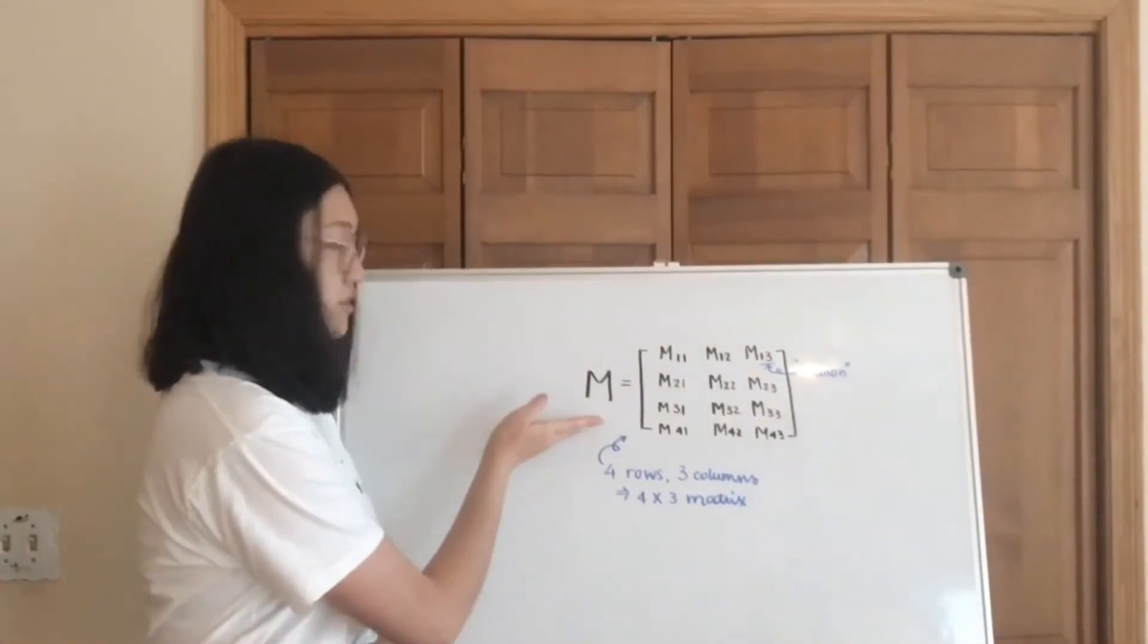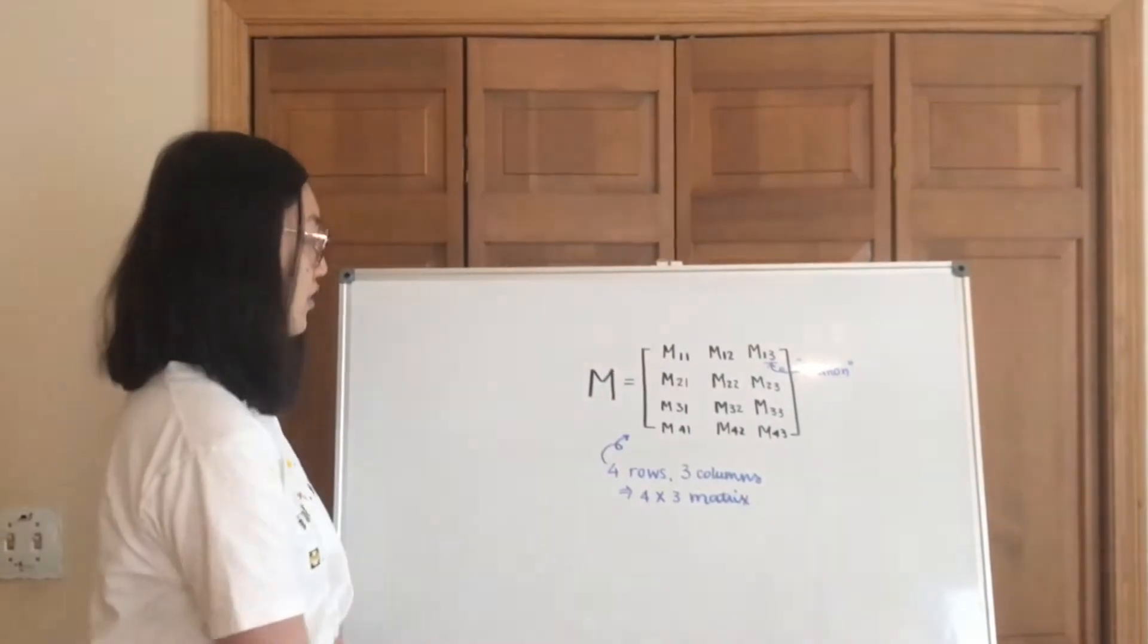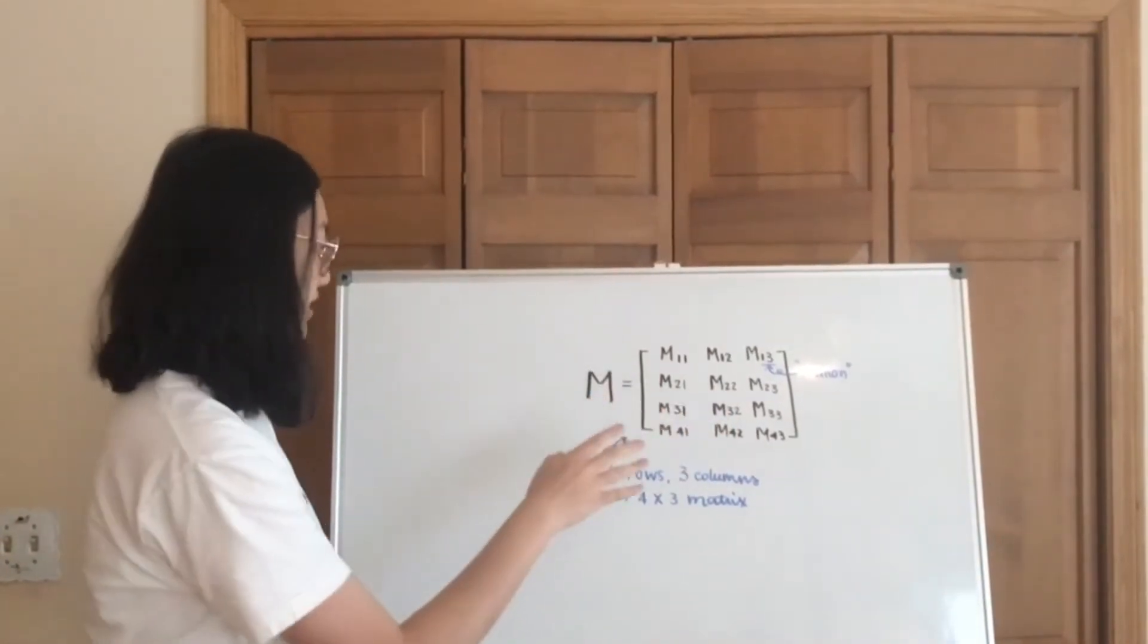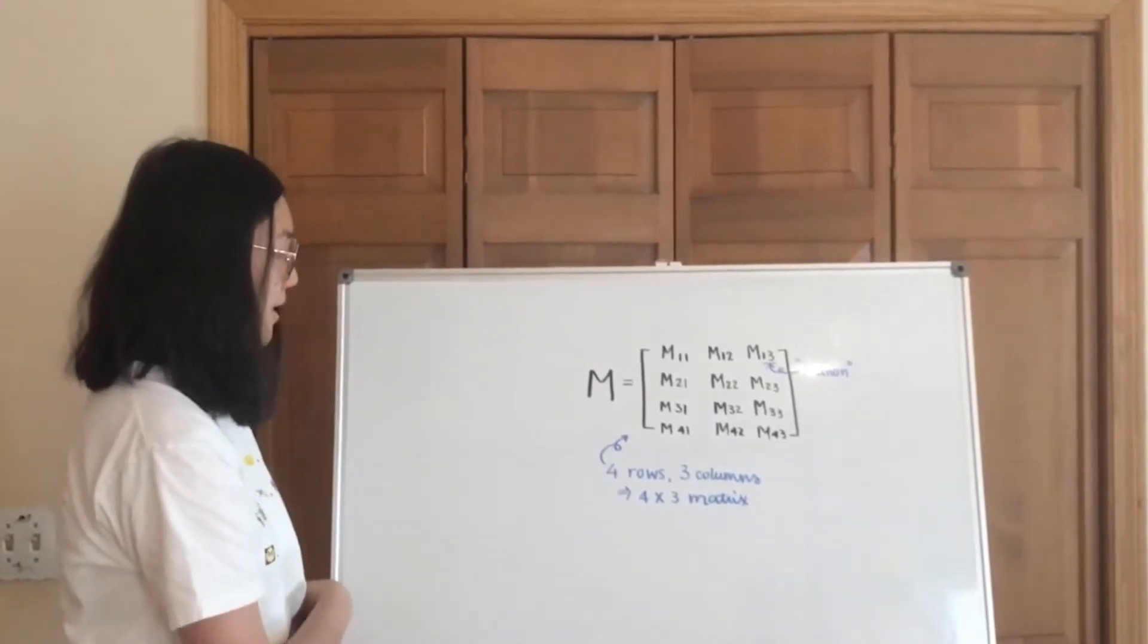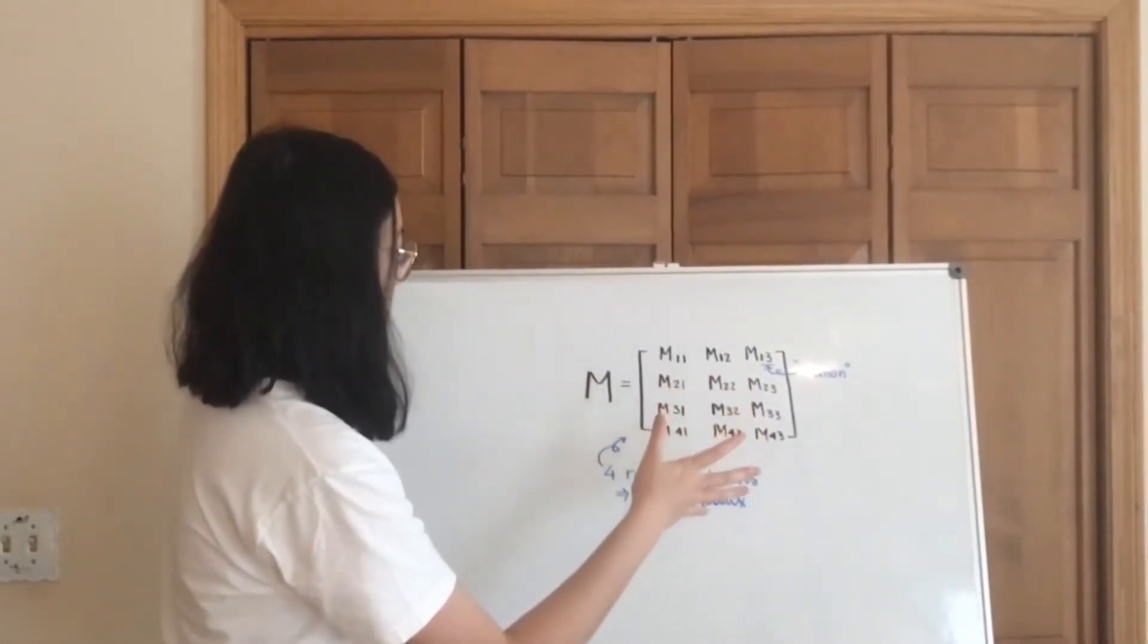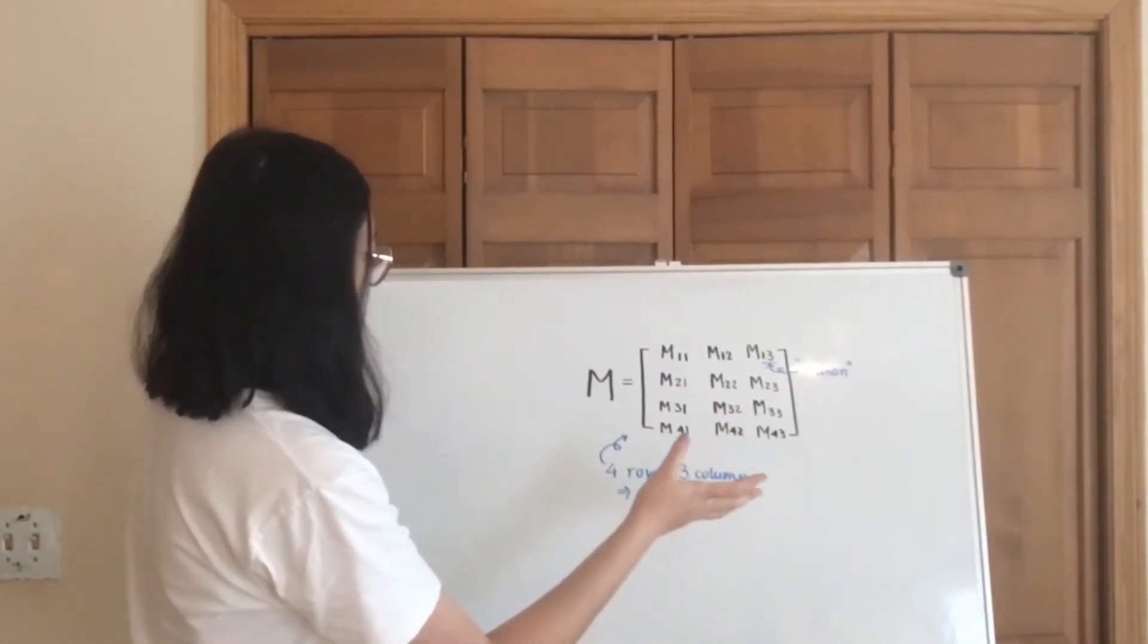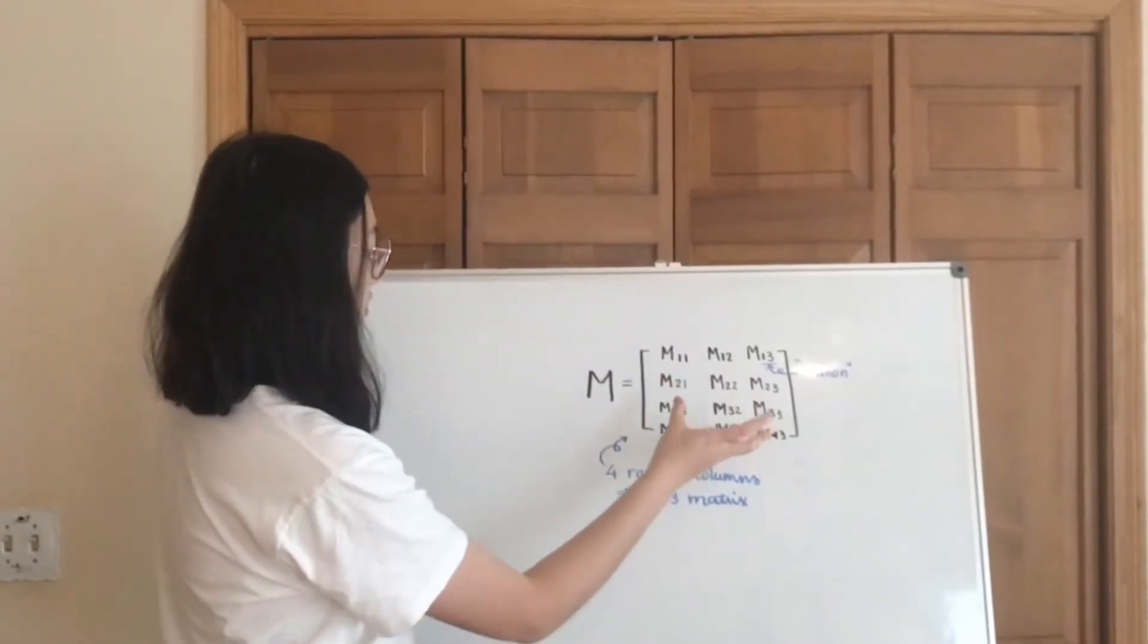Okay, so here's a matrix, and for this matrix we can represent it very easily by the capital letter M. But when we split it out and write it in its full form, it's going to have a bunch of numbers